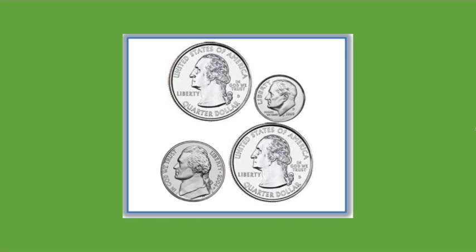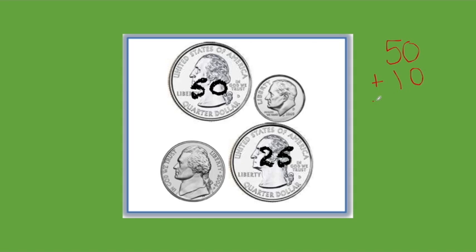How much money do you see here? How much is two quarters worth? One quarter is worth 25. Remember, two quarters is half of a dollar — 50 cents. 50 plus 10. Remember, when we add 10, only the tens place changes — the ones place stays the same. So the ones stays at 0 and the tens place goes up by 1. 5 plus 1 is 6, so 50 plus 10 is 60.